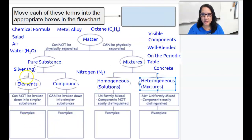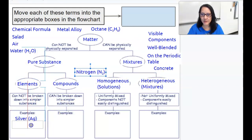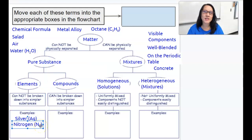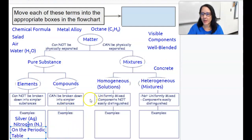Now we get into the examples at the bottom. So elements: some examples would be like silver or nitrogen, and even though there's a little two next to it, that's just a diatomic element. They only exist in pairs, but it's still just nitrogen. And then also there's one other thing, a descriptor: elements are found on the periodic table.